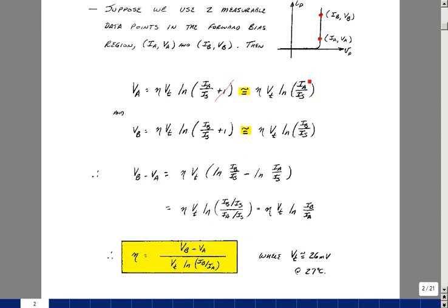and we would just have eta V sub t times the natural log of I sub a over I sub s. Same is true for the second data point with the current I sub b. I could throw that term away if we're talking about milliamps, again, compared to picoamps.